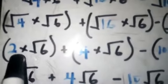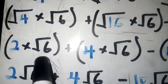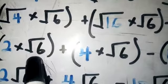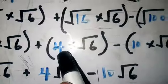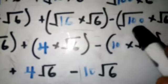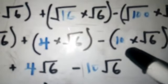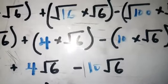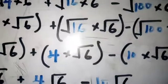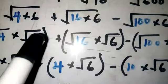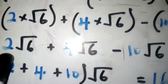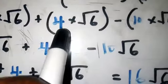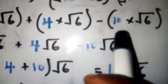Root 4 gives 2, and root 6 stays — you cannot simplify root 6 further. The same applies to the others: root 16 gives 4, and root 100 gives 10. You repeat the second factor. So after simplifying, we have 2 root 6 plus 4 root 6 minus 10 root 6.